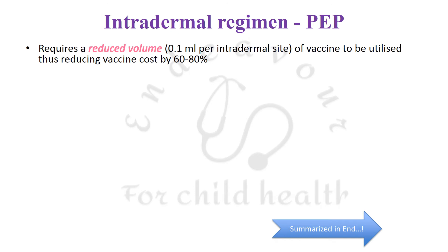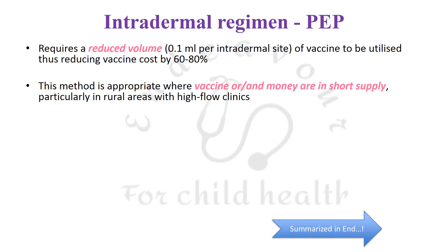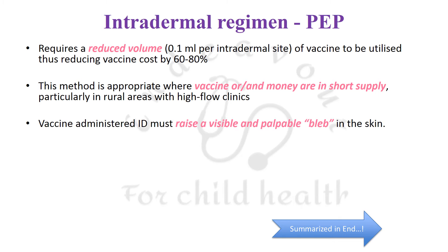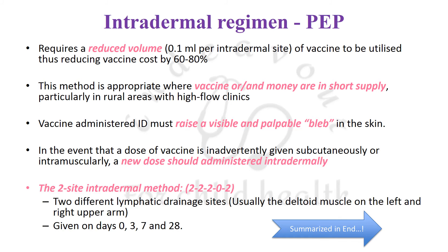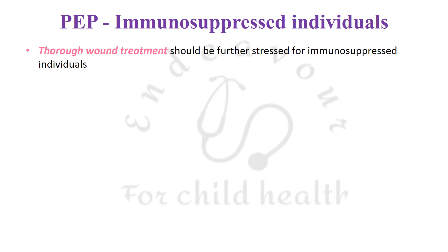The intradermal regimen requires a reduced volume of 0.1 ml per intradermal site, reducing vaccine cost by 60 to 80 percent. This method is appropriate where vaccine supply or money is constrained, such as in rural areas with high-flow clinics. Vaccine administered intradermally must raise a visible and palpable bleb in the skin — this is important to remember. If the vaccine was inadvertently given subcutaneously or intramuscularly, a new dose must be administered intradermally. The recommended regimen is the two-site intradermal method given on days 0, 3, 7, and 28, choosing two different lymphatic drainage sites — usually the deltoid areas of the left and right upper arms.